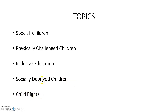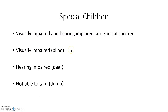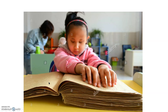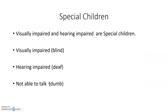In this video, we are going to learn about special children and physically challenged children. Visually impaired and hearing impaired are special children. You studied in 4th standard about this. Visually impaired means blind, hearing impaired means deaf and not able to talk. Those people are called as deaf.